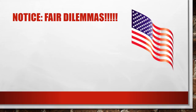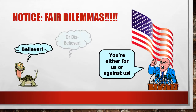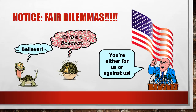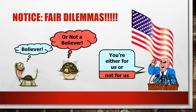Notice the following are bad dilemmas — for us or against us, or believer or disbeliever. But there are such things as fair dilemmas. What about believer or not? Well, that not-a-believer canvases both skepticism and disbelief. Or you're either for us or you're not for us — those are actually the only two options available. So watch out for dilemmas, the either-or premises, and see if they really do exhaust all your possibilities.